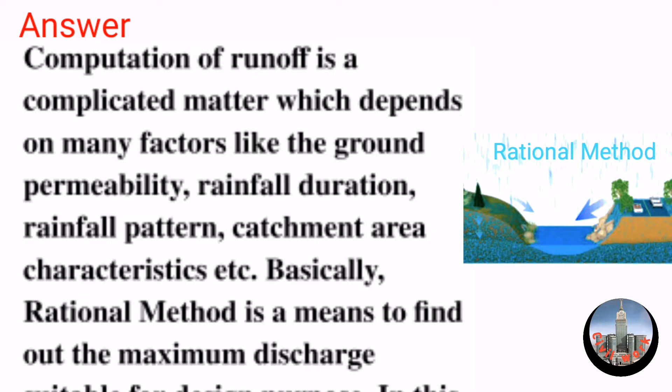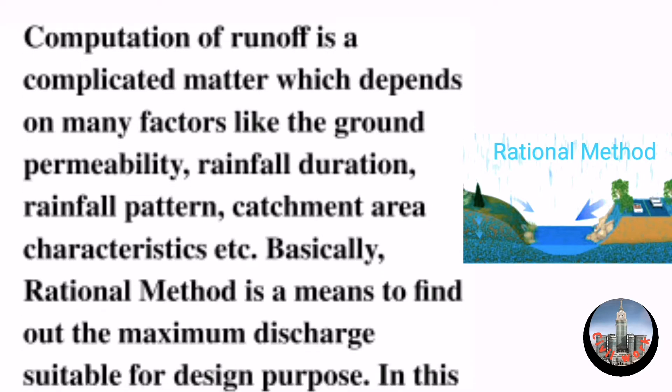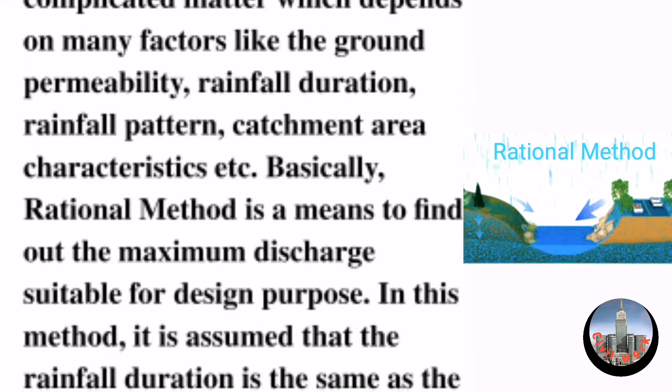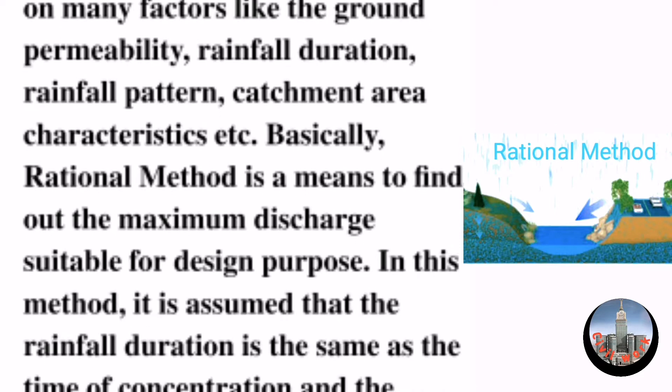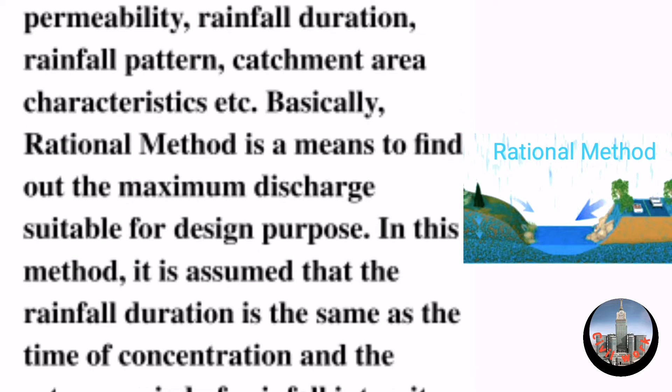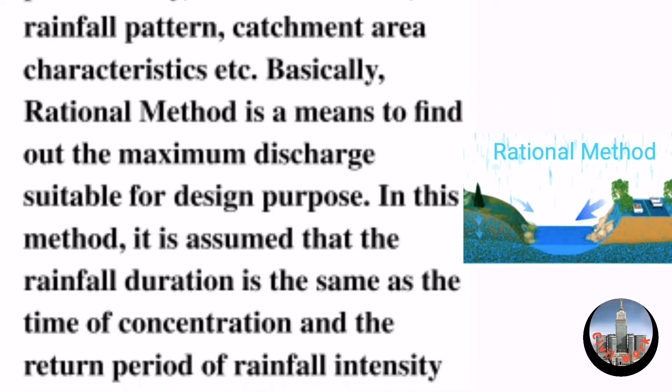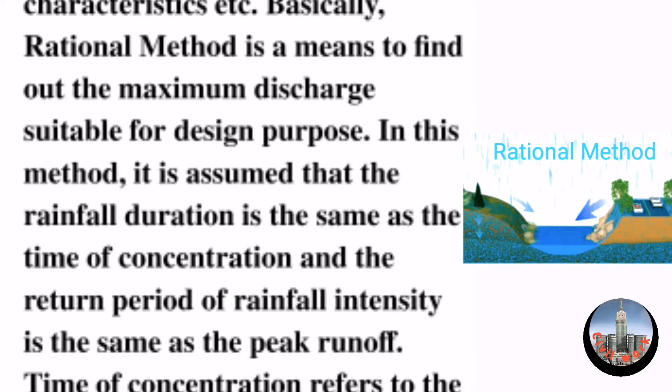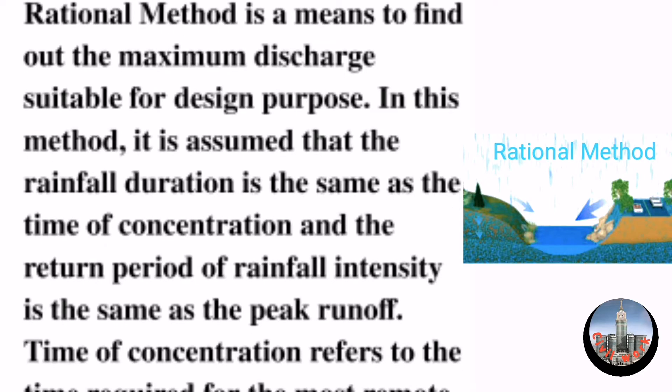These factors include ground permeability, rainfall duration, rainfall pattern, and catchment area characteristics. Basically, rational method is a means to find out the maximum discharge suitable for design purposes. In this method, it is assumed that the rainfall duration is the same as the time of concentration.